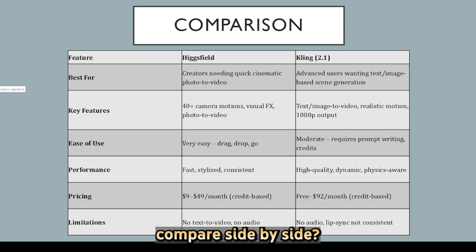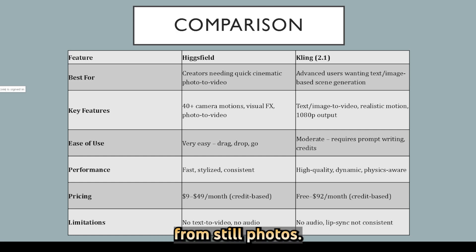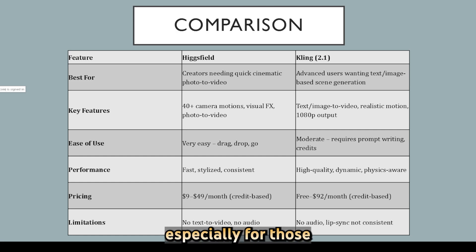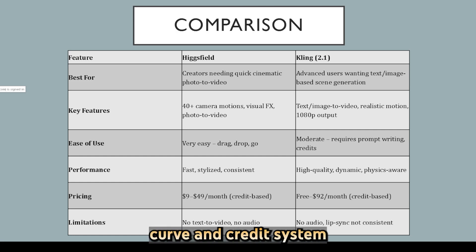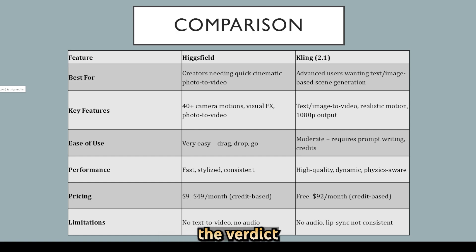But how do they compare side-by-side? Higgsfield is fast, focused, and made for creators who want polished professional movement from still photos. Kling, on the other hand, is more flexible and powerful, especially for those using text prompts or seeking realistic motion. But Kling's learning curve and credit system might slow down casual users, while Higgsfield offers simplicity at a predictable monthly cost.